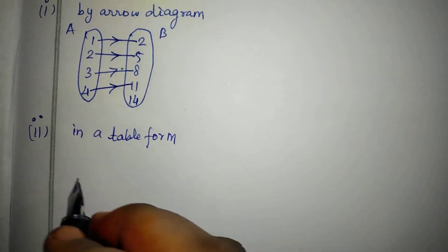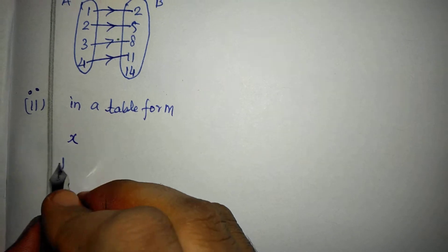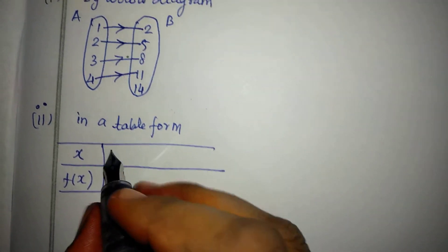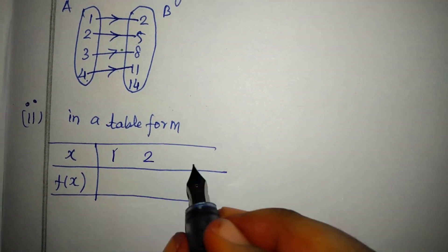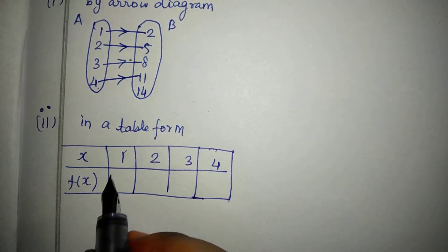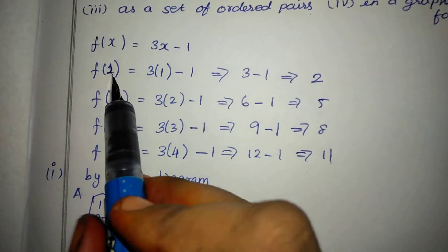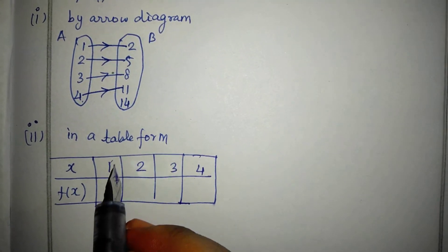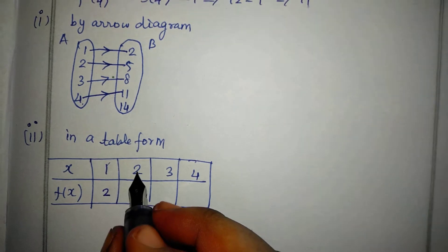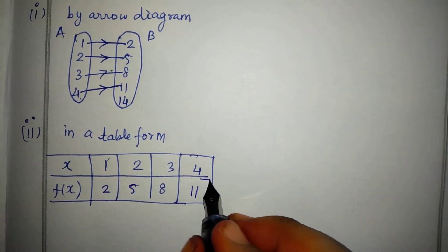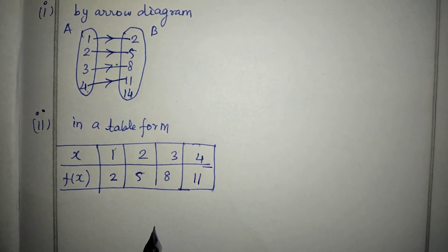Second subdivision: table form. We create a table with x and f(x). For x: 1, 2, 3, 4 and the corresponding f(x) values are 2, 5, 8, 11.